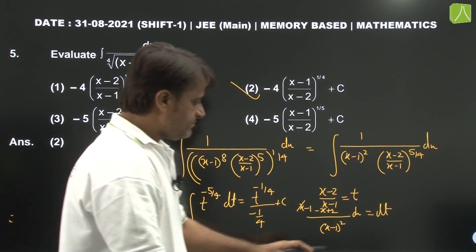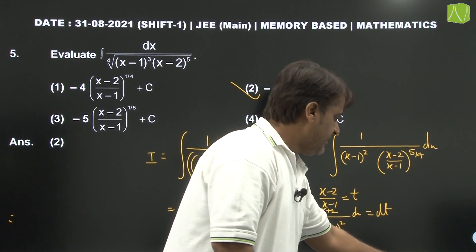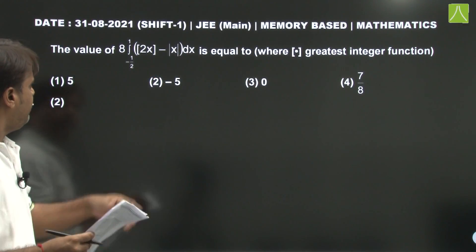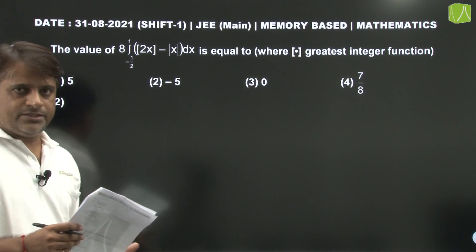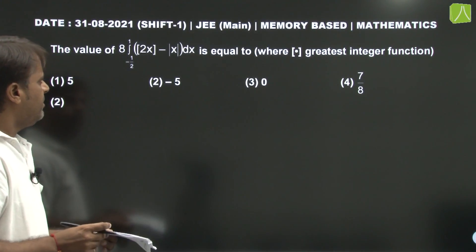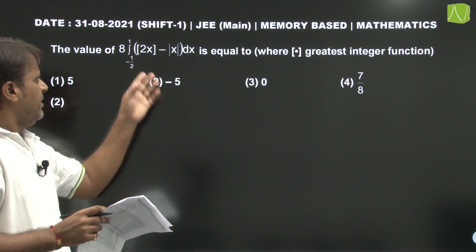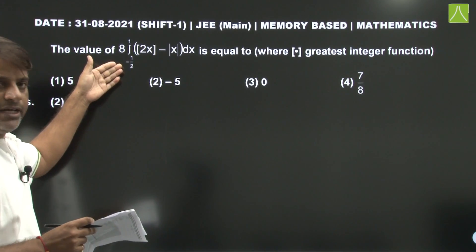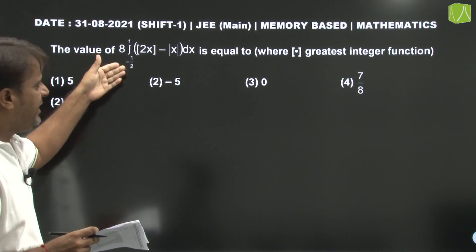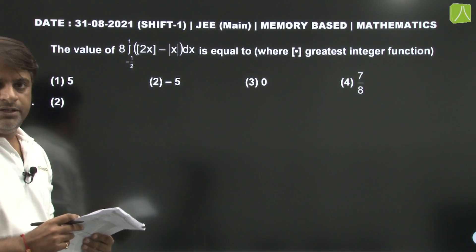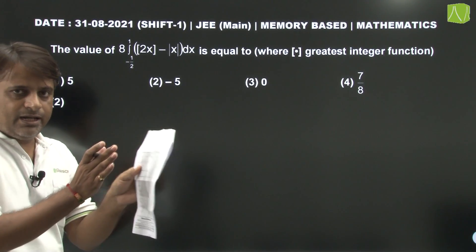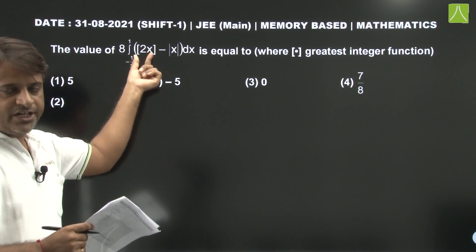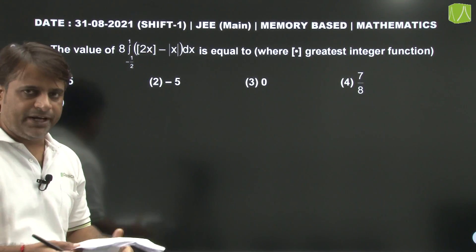Next question: A somewhat tricky level example with greatest integer function. We need to integrate from minus 1/2 to 1. We break it into separate parts wherever the integer changes, i.e., wherever the greatest integer function changes value.